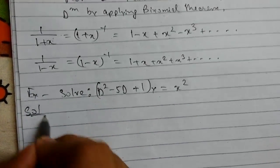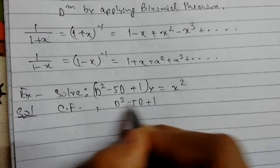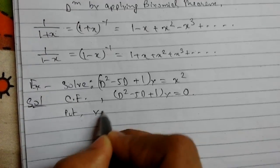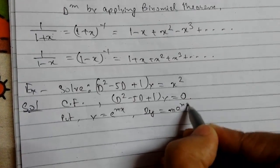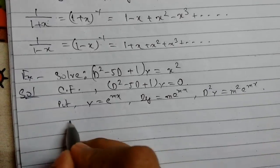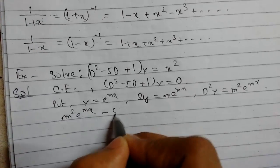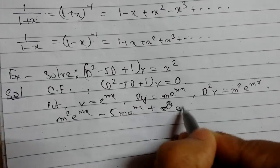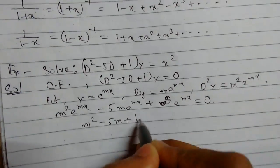Solution: first we will find the complementary function (CF). The CF is given by the corresponding homogeneous equation. We put y equal to e to the power mx, so dy equals m·e^(mx) and d²y equals m²·e^(mx). Substituting into the original equation gives m²·e^(mx) minus 5m·e^(mx) plus e^(mx) equals zero, which simplifies to m² - 5m + 1 = 0.